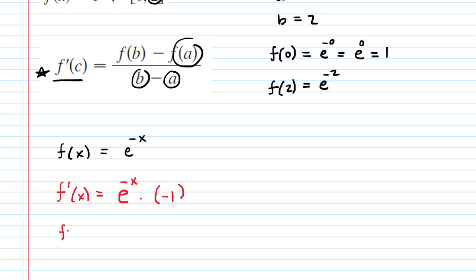Of course the derivative of negative x would be negative 1. So we can simplify this by writing our f prime of x as equaling negative e to the power of negative x. Now we should also plug in c because that is the number that we are seeking in this problem.